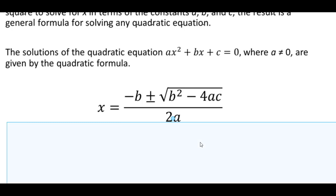And so here is the quadratic formula. We have x = -b ± √(b² - 4ac) / 2a.